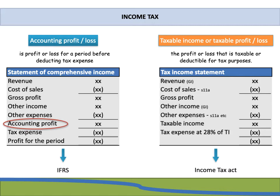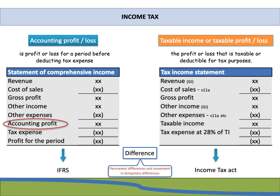Now you might ask: is there really a difference between accounting profit and taxable income? The answer is yes. You get different types of differences. One is permanent differences — where there will always be a difference between accounting profit and taxable income. An example would be income recognised for accounting purposes that is not seen as income for tax, referred to as exempt income. Then there is the movement in temporary differences, which arises due to a timing difference between accounting and tax.